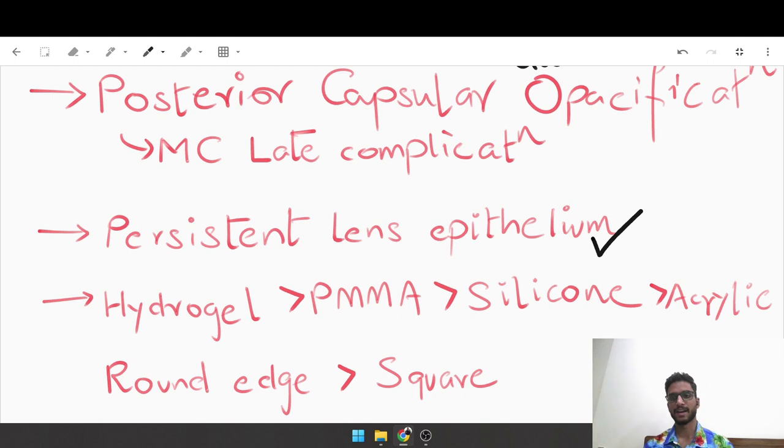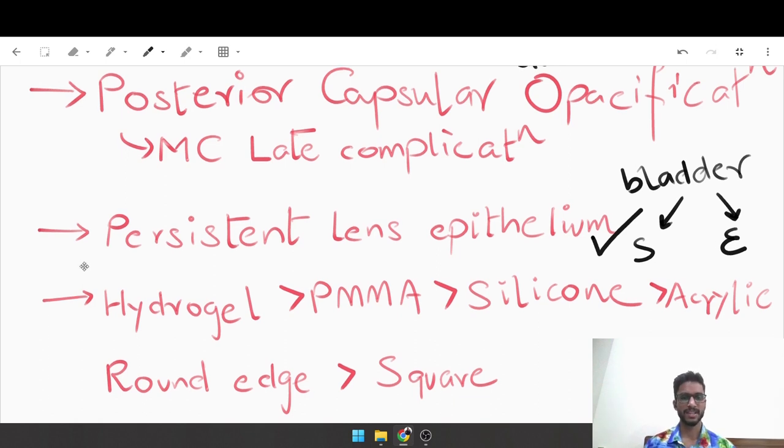This persistent lens epithelium gives rise to new cells, a specific type called bladder cells. There are two patterns in which PCO forms: one is Soemmerring's ring, the other is Elschnig's pearls. This is something we must have discussed during the cataract surgery procedure.